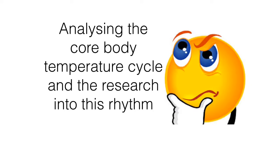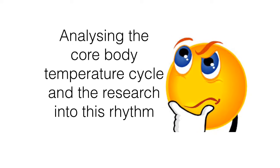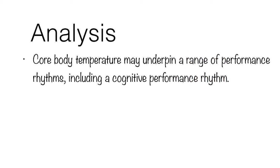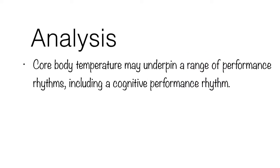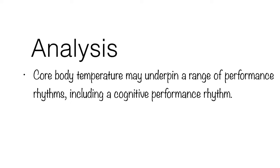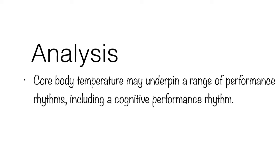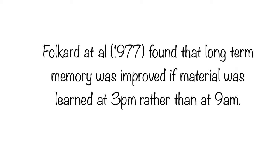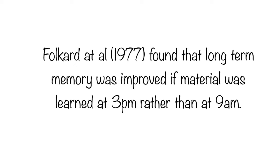The following points are useful to consider when analysing the core body temperature cycle and the research into this rhythm. Researchers have suggested our core body temperature might be linked to a range of circadian performance rhythms. For example, it's been suggested that physical tasks might be performed better at certain times of the day. This has stimulated research into cognitive performance rhythms, such as cyclic changes in memory functioning over the 24-hour period.